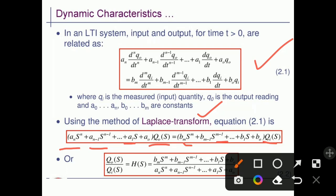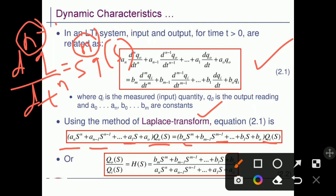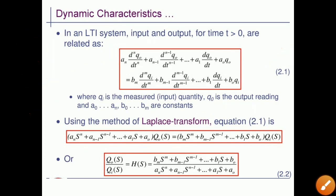The Laplace transform of a derivative: if the derivative is d^n·q/dt^n, its Laplace transform is s^n·Q(s). If the order is n, then you have s^n; if it is n-1, then it is s^(n-1). The ratio of Q_0(s) divided by Q_i(s) — that is, output upon input — is called the transfer function H(s).